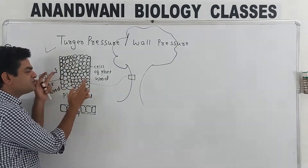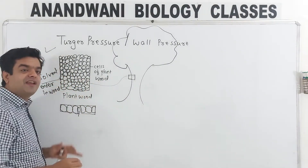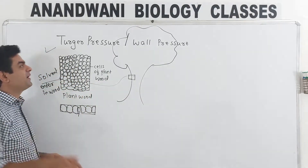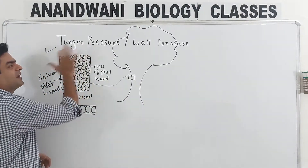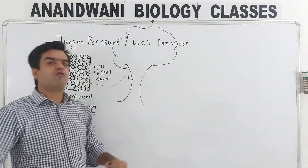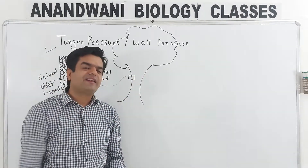The water entering the past cells develops a pressure, which is called turgor pressure. Now the turgor pressure — we can also call it wall pressure.